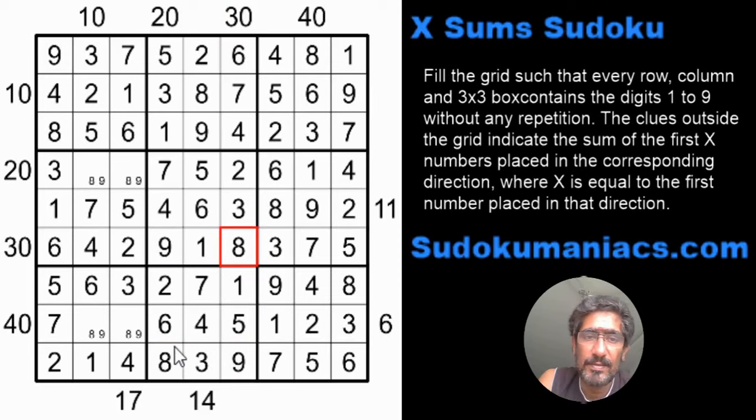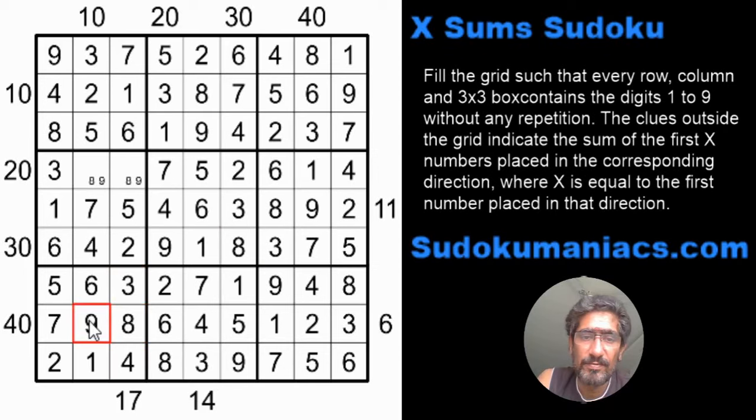For the clue 17: the first 4 cells — 2, 3, and 4 add up to 9, so I required an 8 here to get the sum of 17. And that was how this puzzle was supposed to be solved.